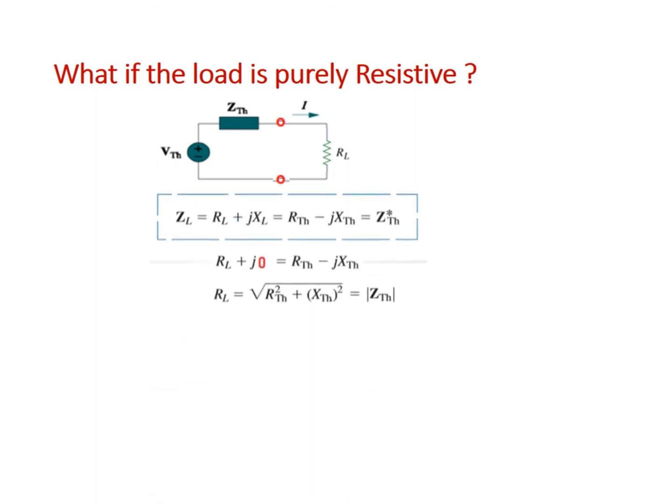We know the condition when the load was an impedance: Z_L equals Z_Thevenin conjugate. From here we can write that R_L should equal R_Thevenin and jX_L should equal minus jX_Thevenin.